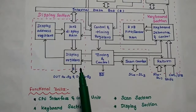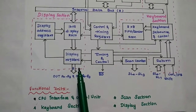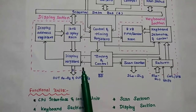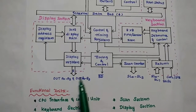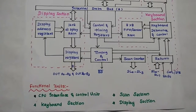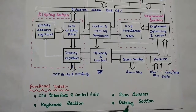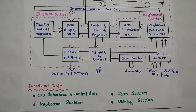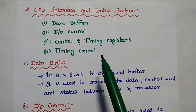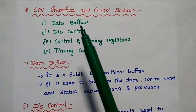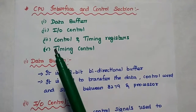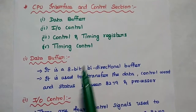The display registers are two 4-bit registers used to hold the bit pattern of characters to be displayed on the display device. To recap, the functional units of 8279 are: CPU interface and control unit, scan section, keyboard section, and display section. The CPU interface control unit consists of data buffer, input-output control, control and timing registers, and timing control.